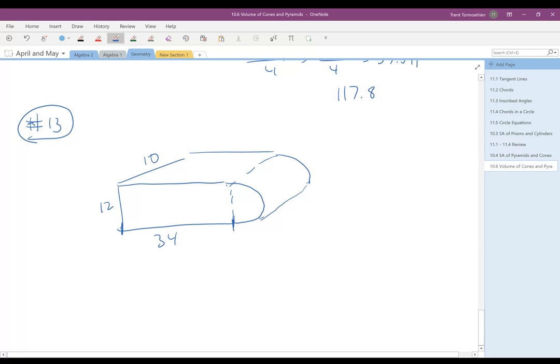So to find the volume of this, what you're going to do is you're first going to find the volume of the rectangular prism, which is just going to be 10 times the area of the base, which is going to be 10 times 34 times the height, which is 12.